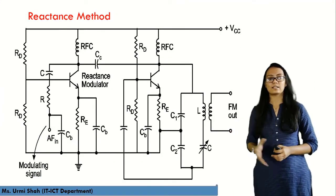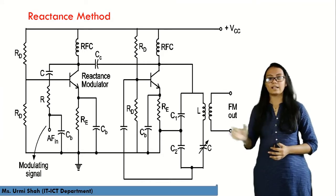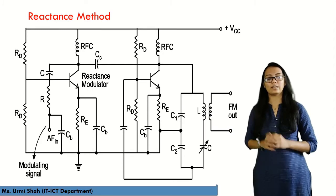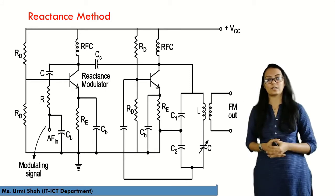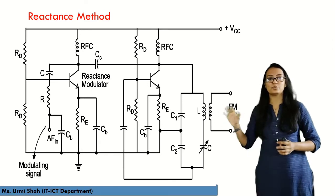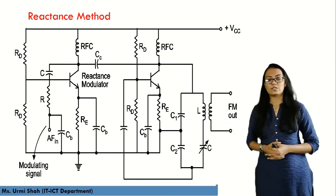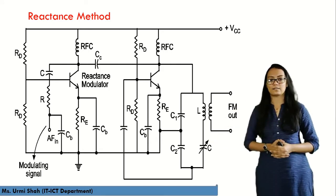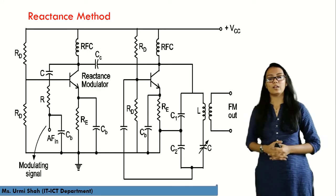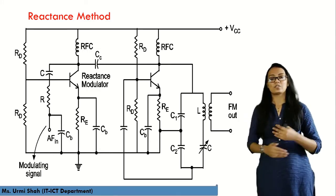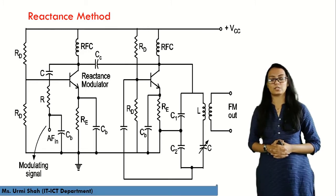This is the circuitry for the reactance method. Looking at the circuitry, you can see there is an AF input from where the modulated signal is applied to the transistor circuitry. There is a back-to-back connection of transistors — a two-stage transistor circuitry — which is applied at the end to the oscillator circuitry. This oscillator circuitry provides the final FM output.